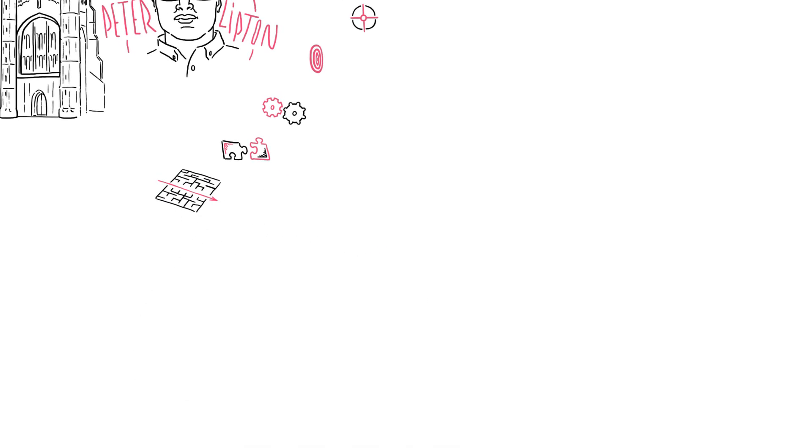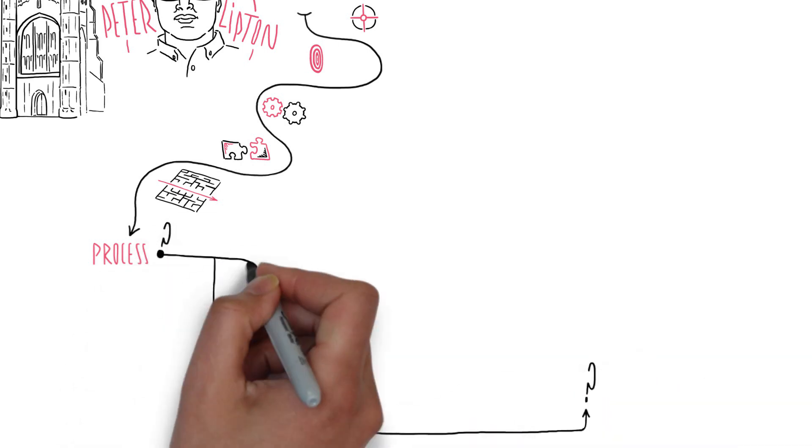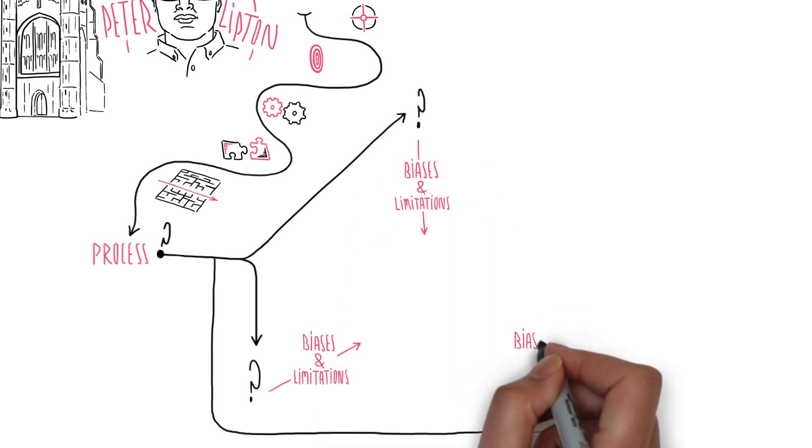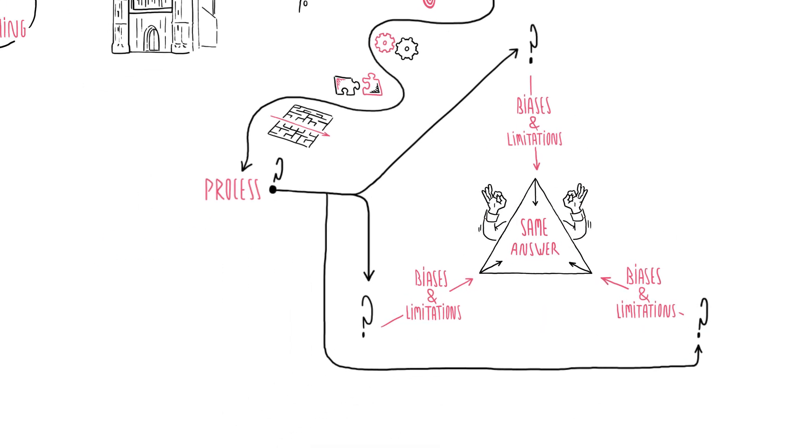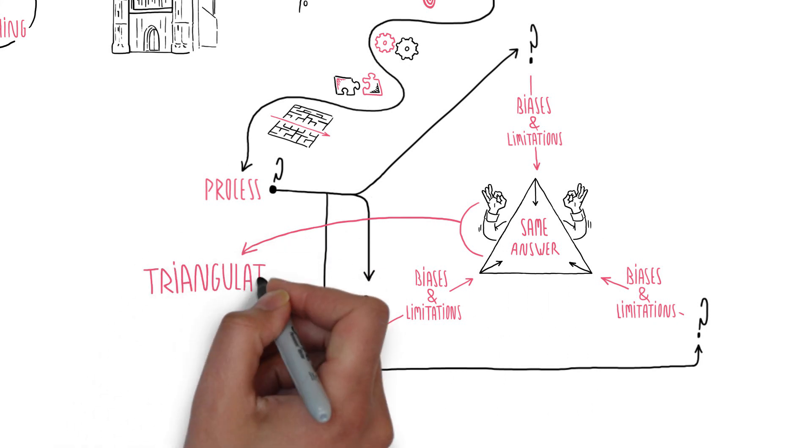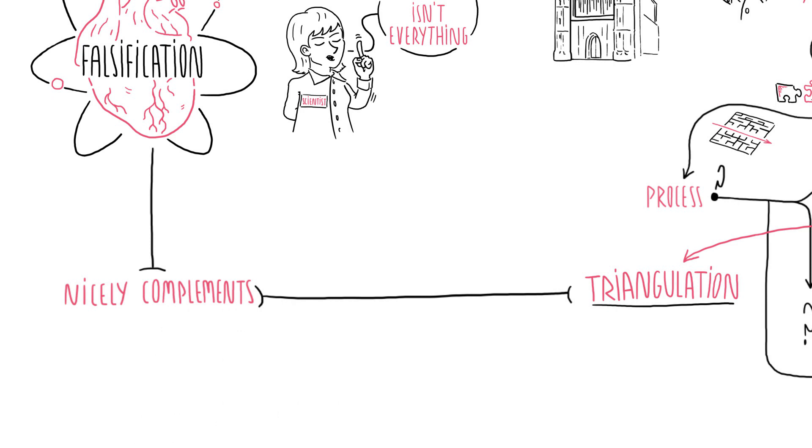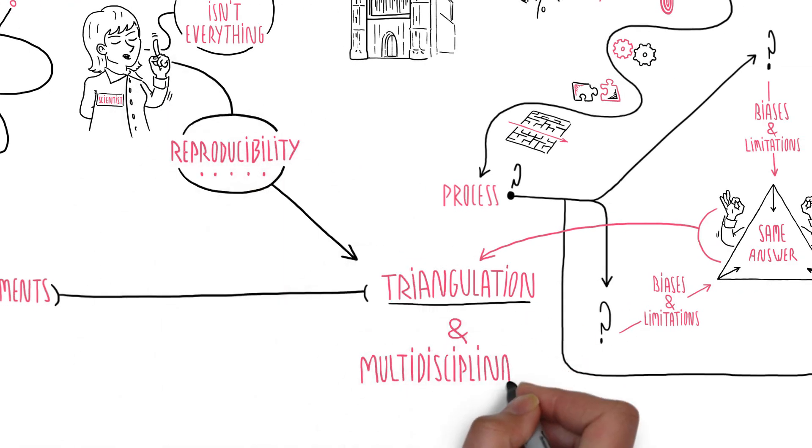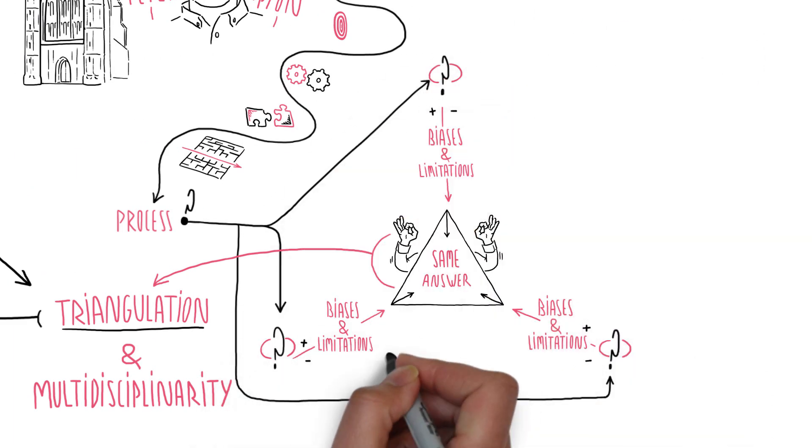The process of arriving at the simplest and most likely explanation for an observation turns on being able to address the same question from different perspectives. Each approach will have its own biases and limitations, but if each gives the same answer, we can be more confident in the result. Known as triangulation, this is an approach that nicely complements traditional falsification. In the current debate around reproducibility, too little is said about the need for triangulation and multidisciplinarity, approaching the same research question from multiple methodological perspectives.